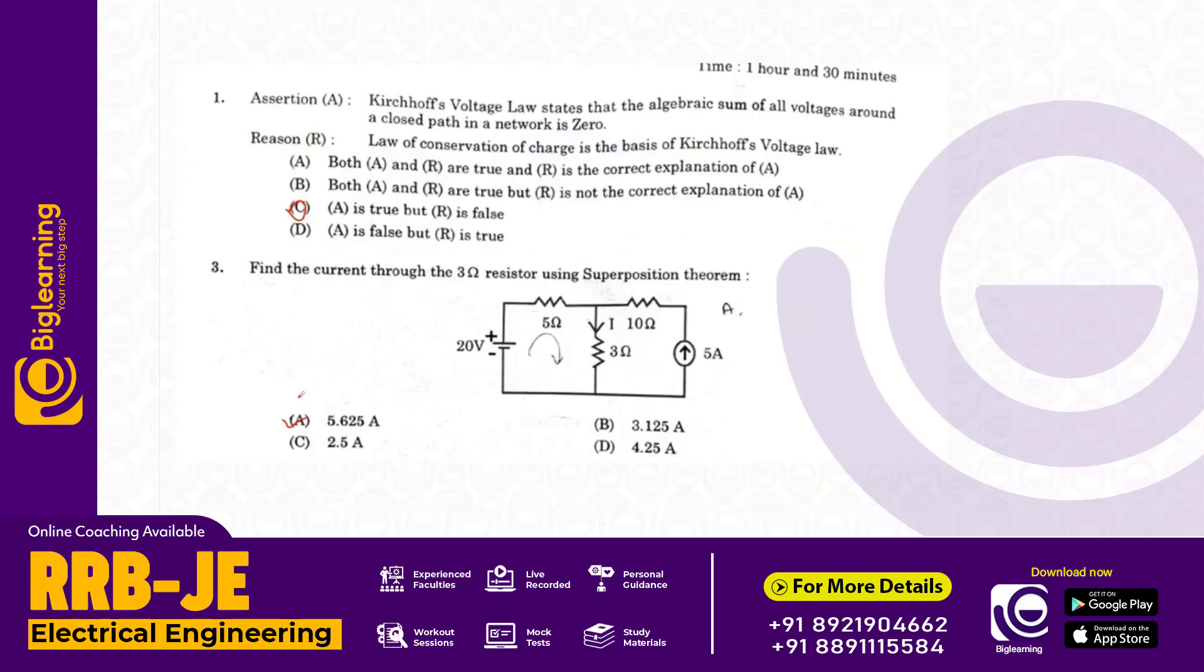Next, find the current through the three ohm resistor using superposition theorem. After applying the theorem, the answer is 5.625 ampere.